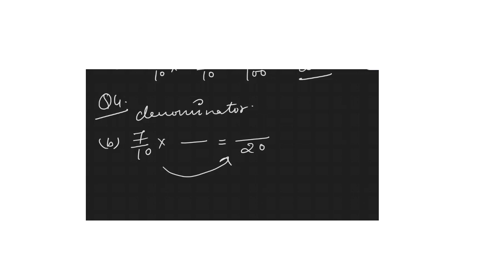So multiply both numerator and denominator by 2: 10×2 = 20 and 7×2 = 14. So your equivalent fraction is 14/20.